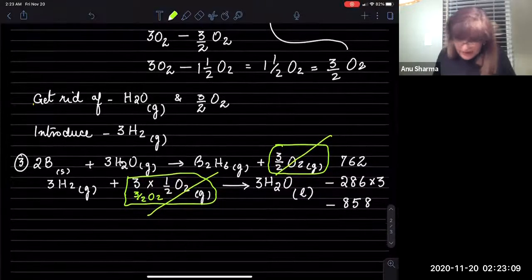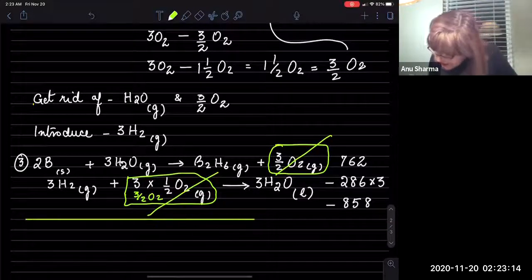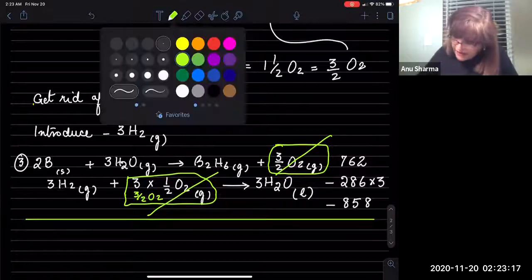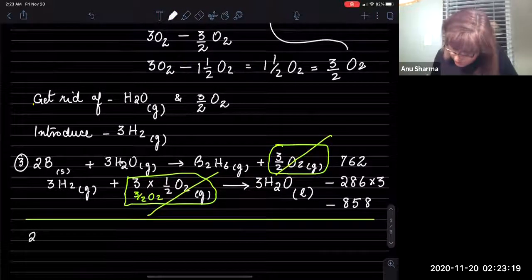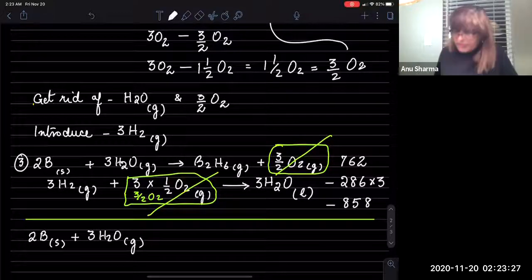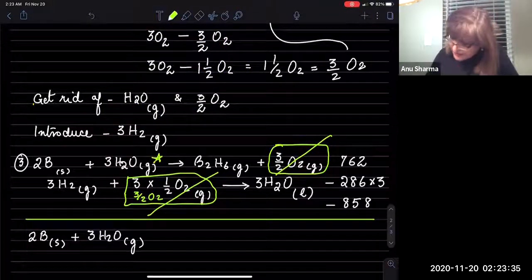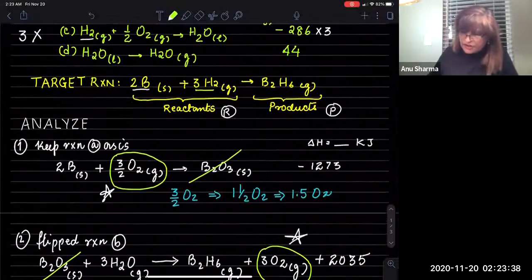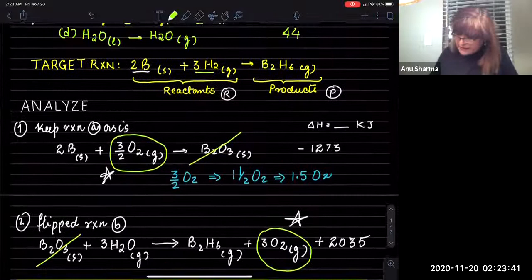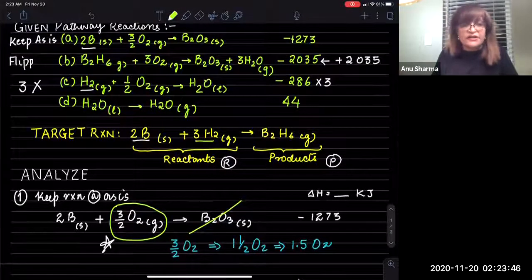We have our next piece: 2 boron as a solid plus 3H₂O as a gas. But why did I not cancel out the H₂O? Keep in mind, this H₂O is in a gaseous state, and the one from reaction C is in a liquid state. That's where our fourth reaction comes into play.